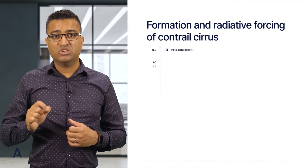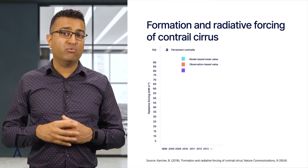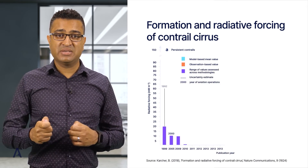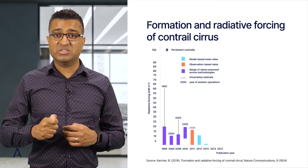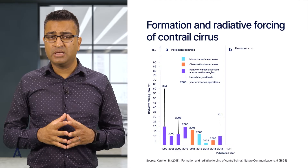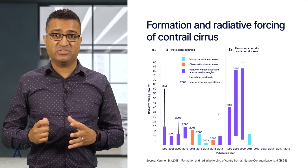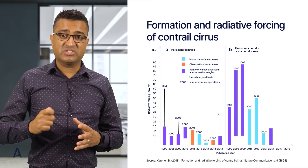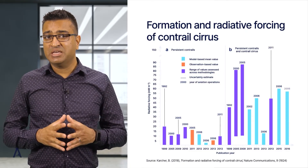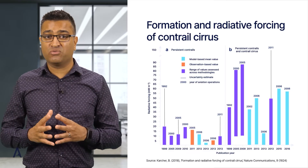This chart shows the estimated global annual mean radiative forcing from aircraft-induced clouds from several studies using computer models and observations. For persistent contrails, shown on the left-hand side of the chart, recent studies suggest a radiative forcing value between 4 and 16 milliwatts per square metre of contrail.